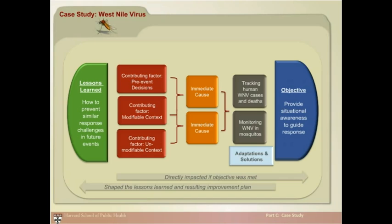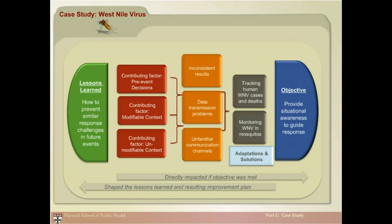There were a number of immediate causes for the problems encountered. Lab testing is done for different purposes in West Nile virus — for treatment decisions in human patients and identifying infected mosquito pools. Lab testing in Texas is done in a combination of state, county, and private labs, depending on the size of the county, each operating under a different timeframe yielding inconsistent results. Differences among labs in testing procedures and standards led to delays in data transmission of lab results. Communicating results from all of these labs to the appropriate local health department took time, and communication through unfamiliar emergency channels complicated the process.